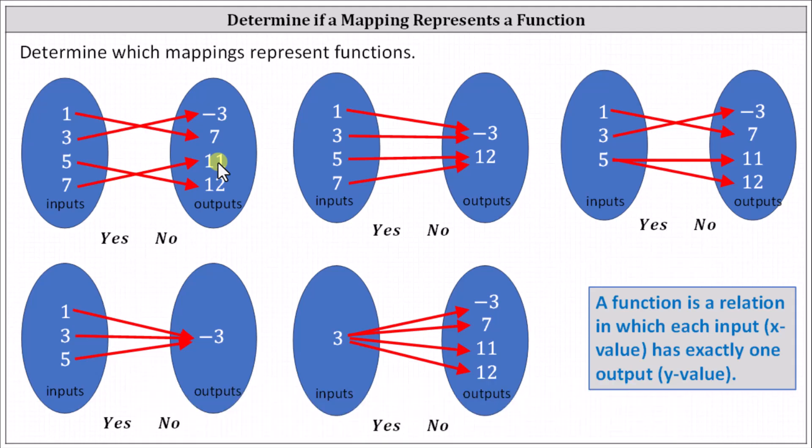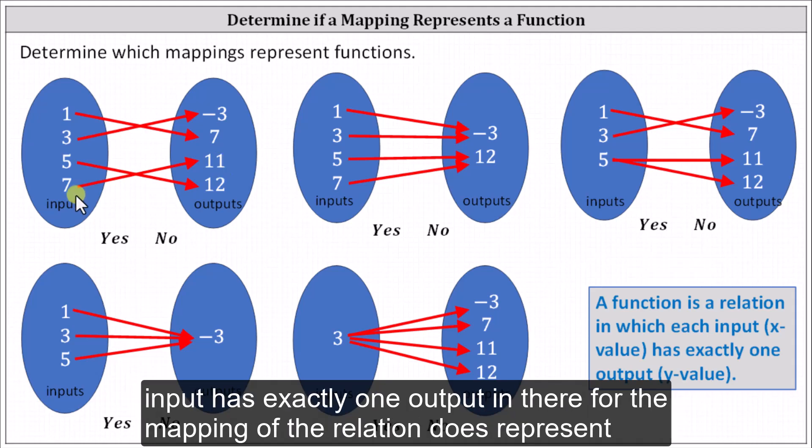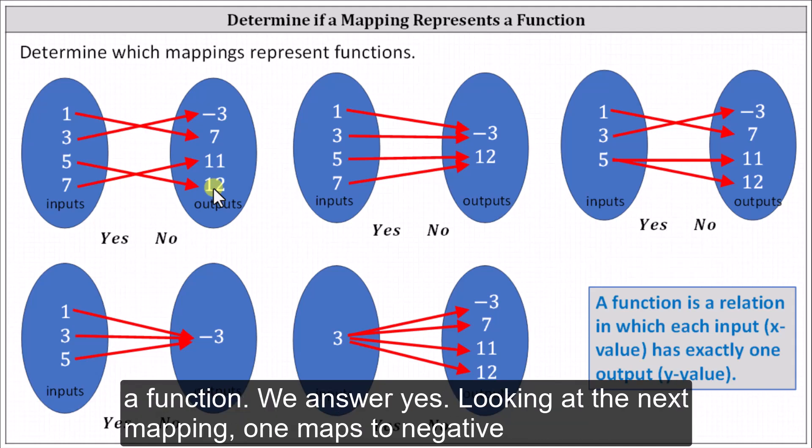Notice each input has exactly one output, and therefore the mapping of the relation does represent a function. We answer yes.